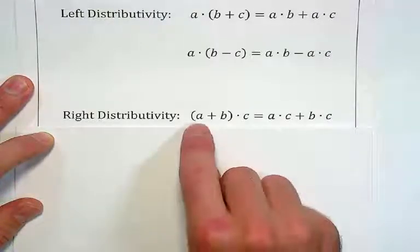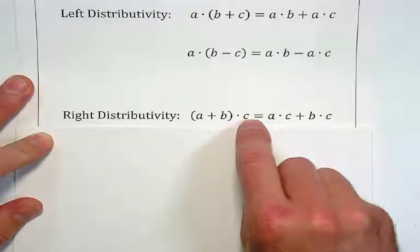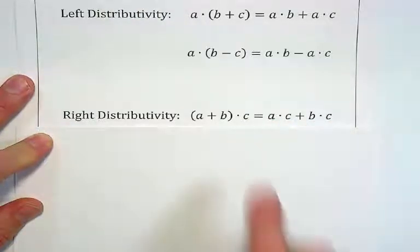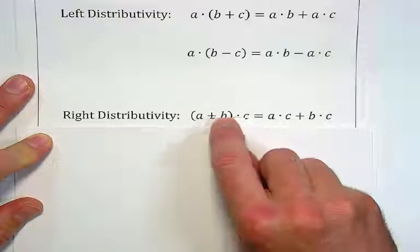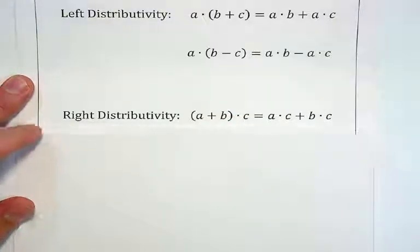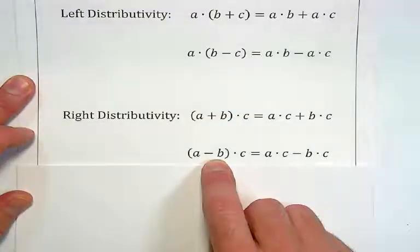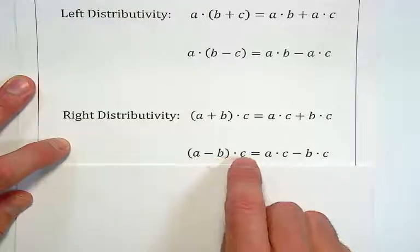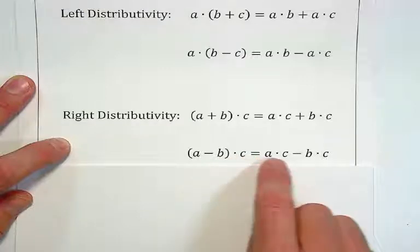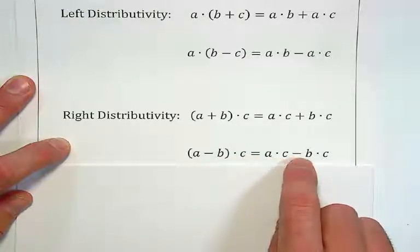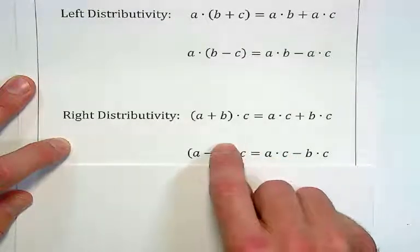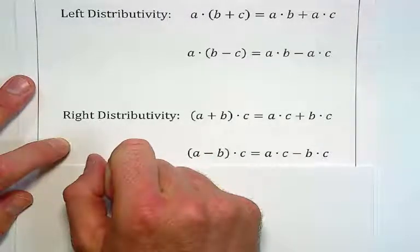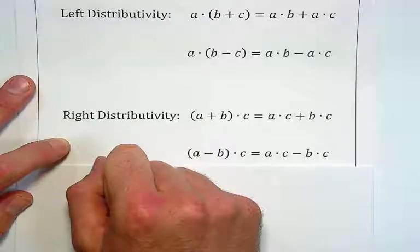The same truth can be found with multiplication on the right-hand side of an addition or subtraction. If I have a plus b, times c on the right, that equals a times c plus b times c — I distribute this multiplication over the addition inside. Similarly, if I have a minus b multiplied on the right by c, I can write that as a times c minus b times c — this multiplication gets passed through the subtraction. We'll use this in the next video as we multiply polynomials by each other. See you there.